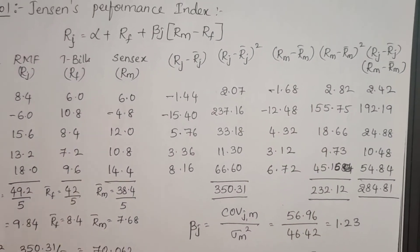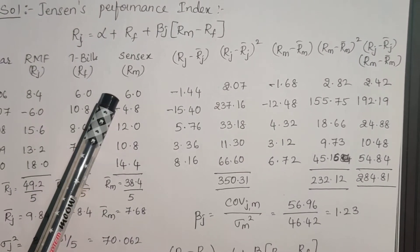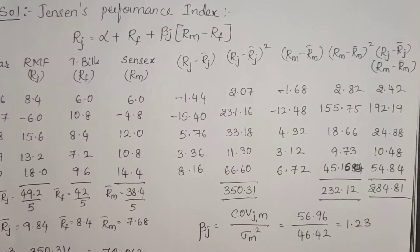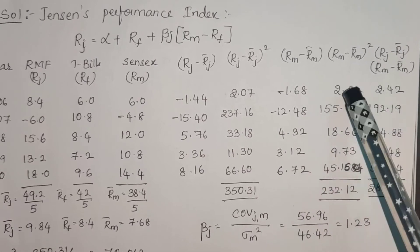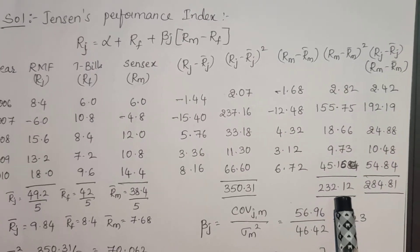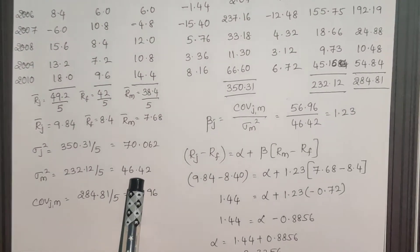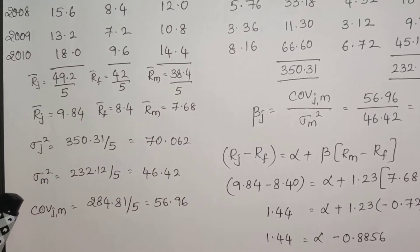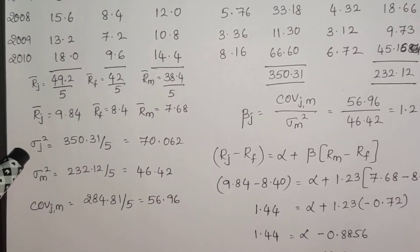In the same way for market, RM minus RM bar. Independent or actual returns minus expected returns, how the expected returns deviated from the actuals. We squared them, summed them, and divided by number, which gives market variance. I got market variance and portfolio variance.